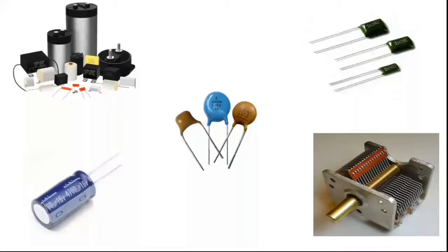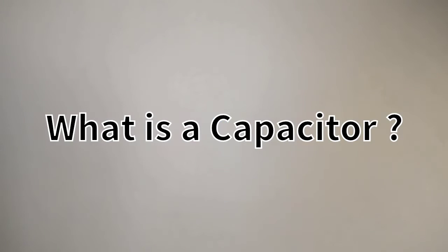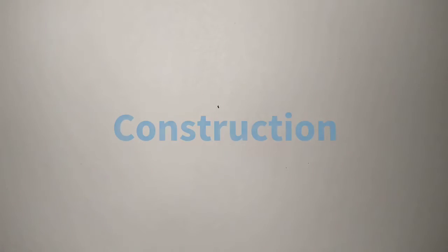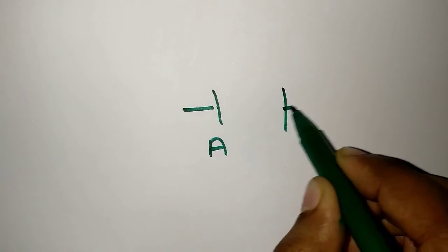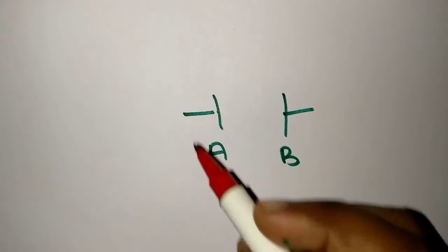Here in this video we will be covering the topic of capacitor. A capacitor is an electrical component that stores electrical energy in an electrical field. A capacitor consists of two metallic plates A and B which is separated by an insulating material known as dielectric.